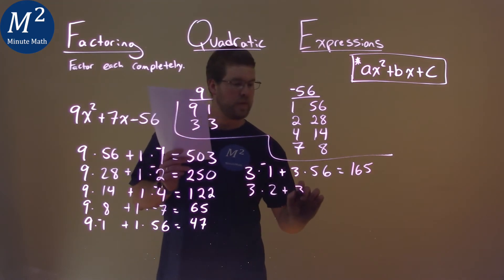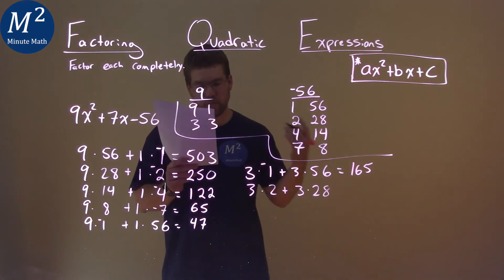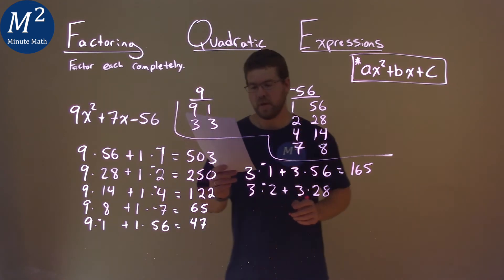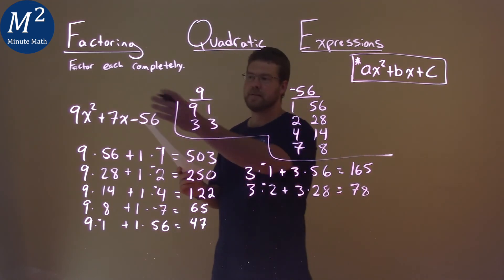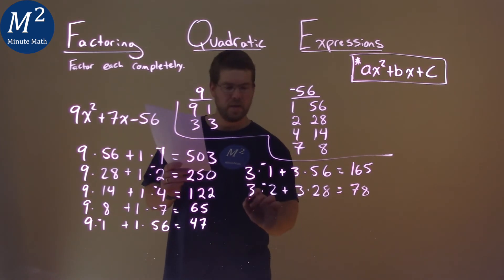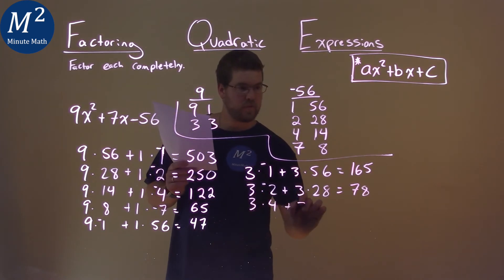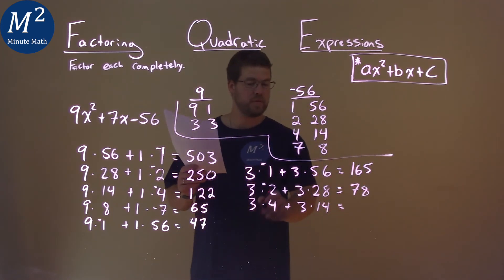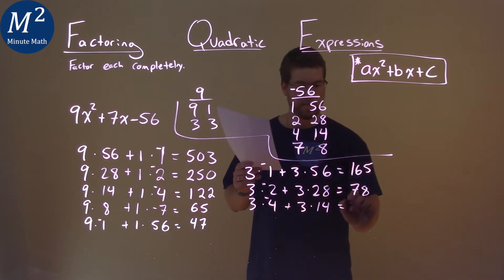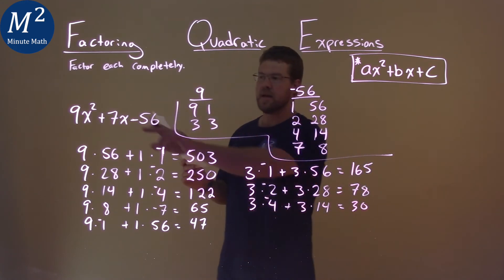3 times 2 plus 3 times 28. Smaller of the two is a negative 2 there, and that comes out to be a 78. Again, not a positive 7. 3 times 4 plus 3 times 14. 3 times 4 is clearly smaller. We multiply that out and we get a positive 30. Again, not 7.